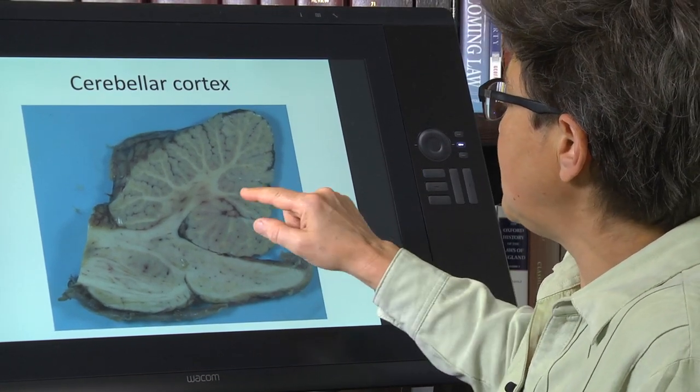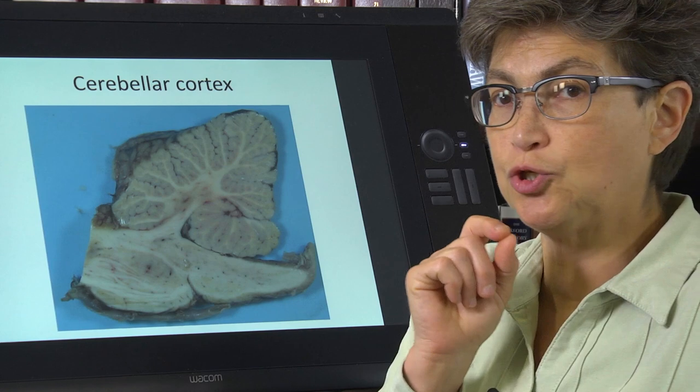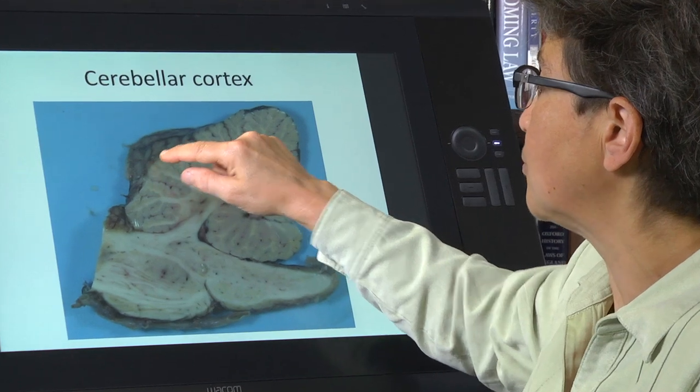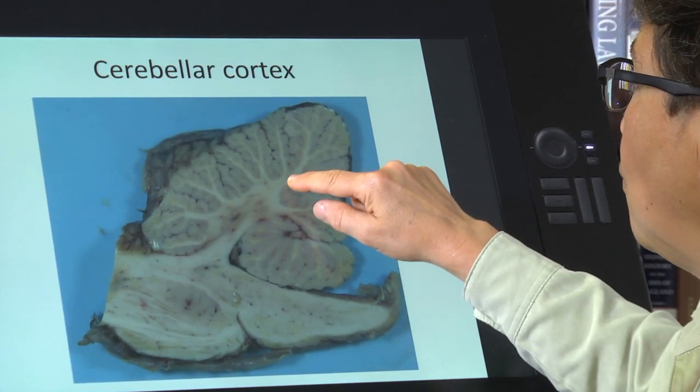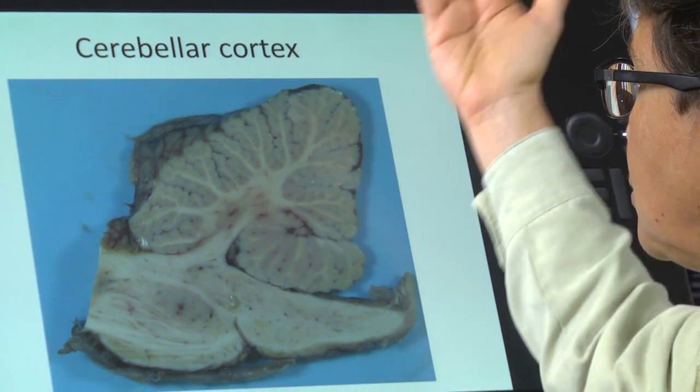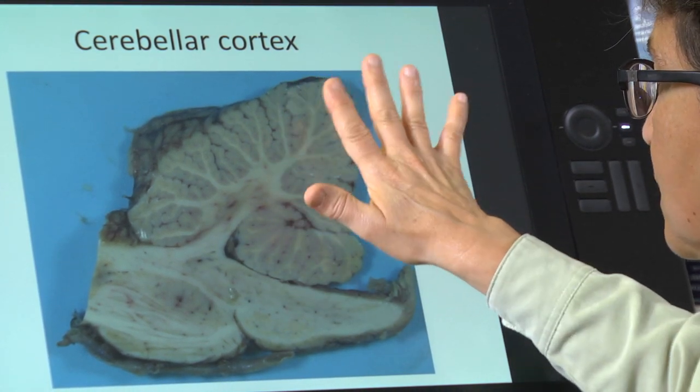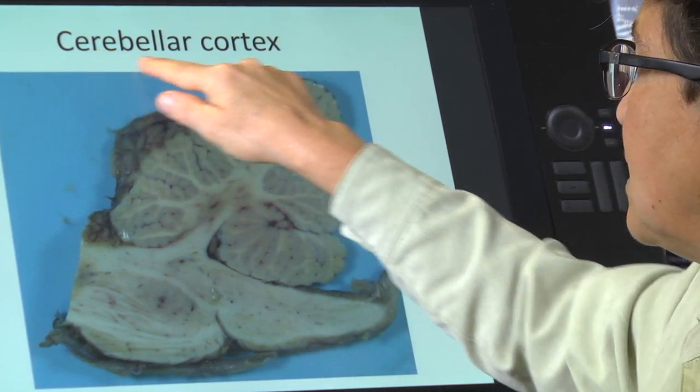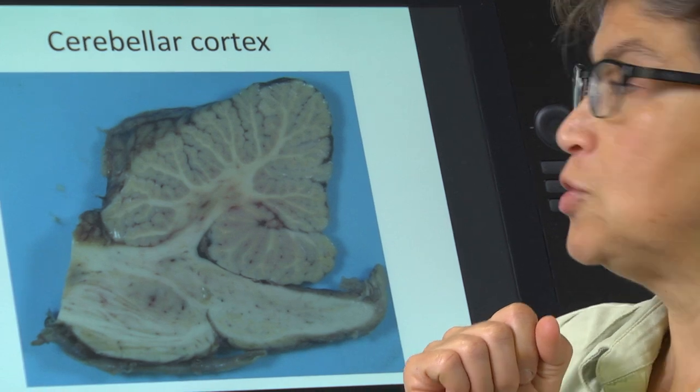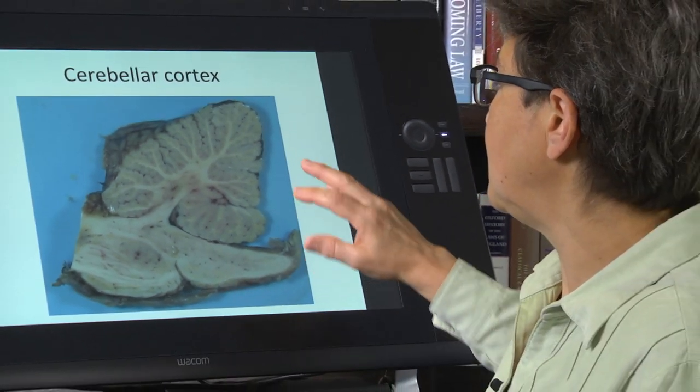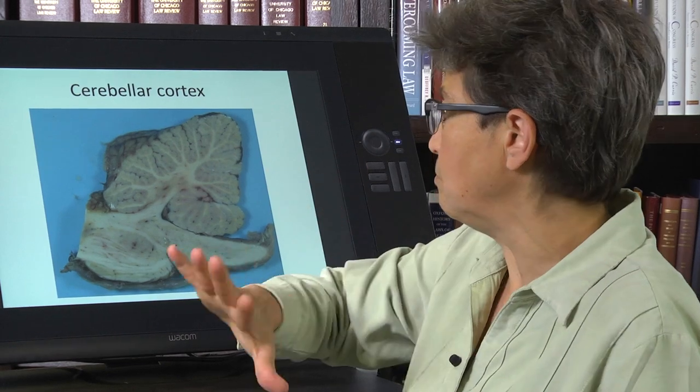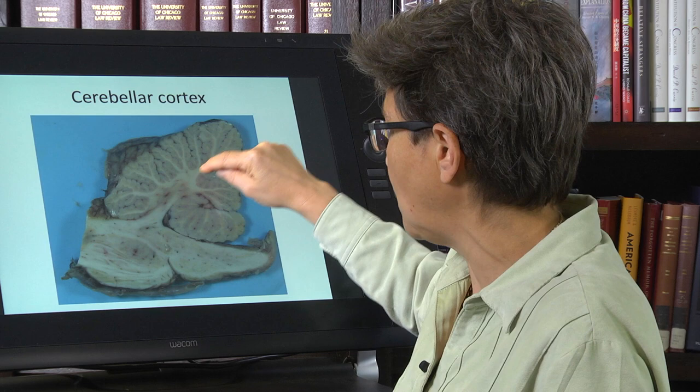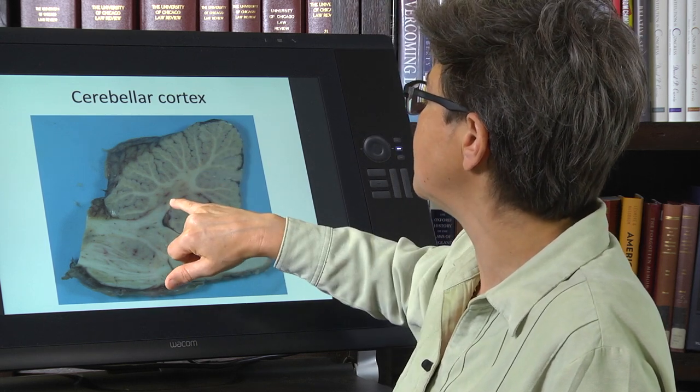But what I really want you to see here is that just as was true in the cerebral cortex, there is an outer rind of gray matter with underlying white matter. So this is a fresh slice through the brain. This is unstained. And you can see this outer rind of gray matter. And that is the cerebellar cortex. So what we're going to see in a moment is that there are actually three major areas in the cerebellum. One is the cerebellar cortex, one is the white matter. And then down here,